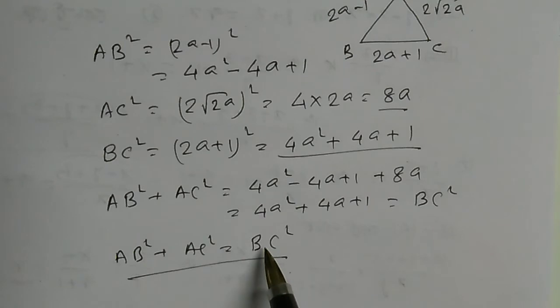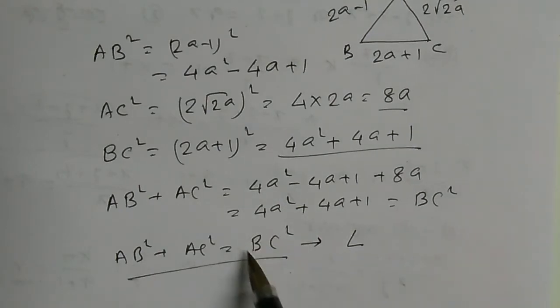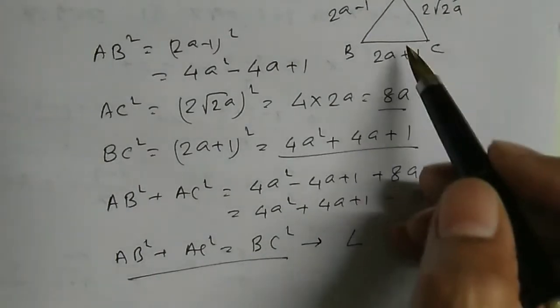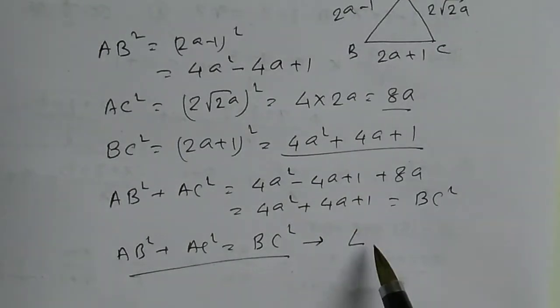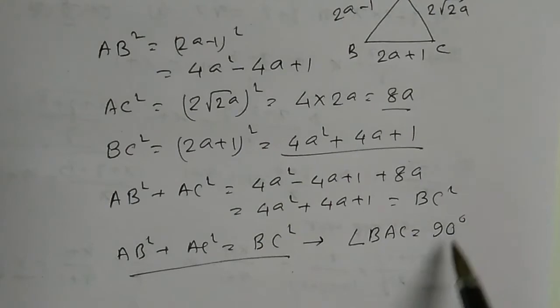From the reverse theorem of Pythagoras, we can say the BC is the hypotenuse of the triangle ABC. So angle BAC is the right angle, that is 90 degree.